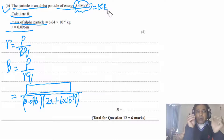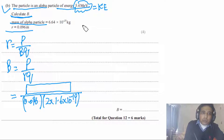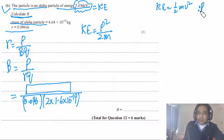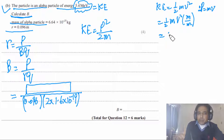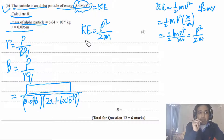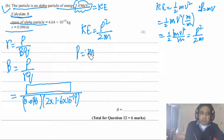Kinetic energy relates to momentum by KE = p²/(2m). We can derive this: KE = ½mv², and p = mv, so KE = p²/(2m). Therefore momentum p = √(2m × KE). This is a very important equation — students often struggle to link kinetic energy with momentum.